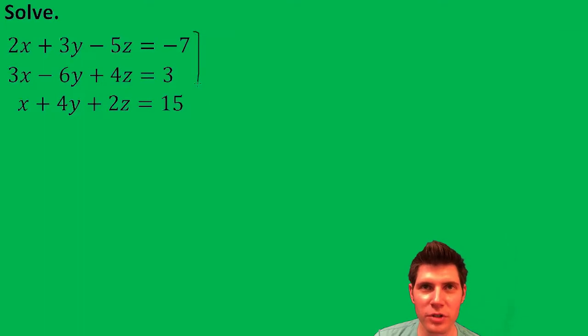First thing you want to do is take these first two and get rid of one of the variables. I'm going to get rid of x. So I'm going to multiply this top one by negative 3 and this bottom one by positive 2.